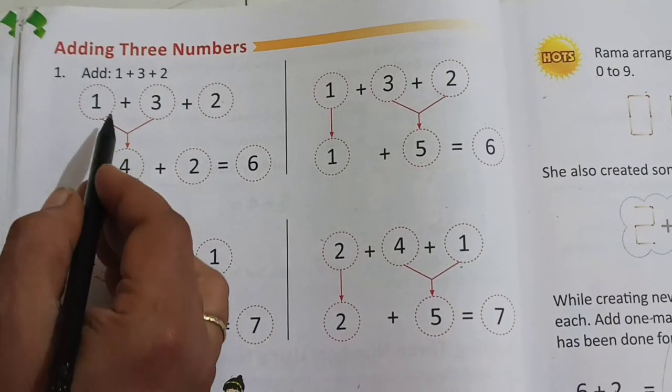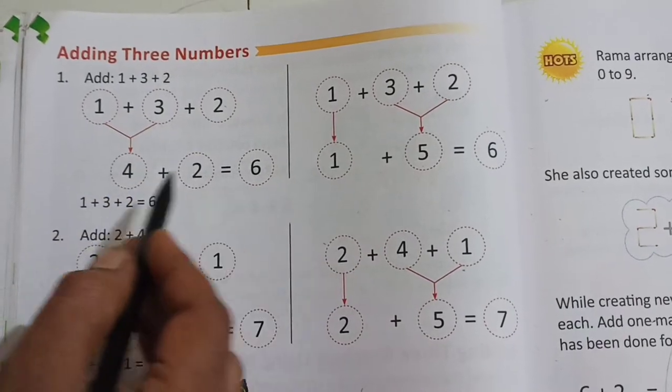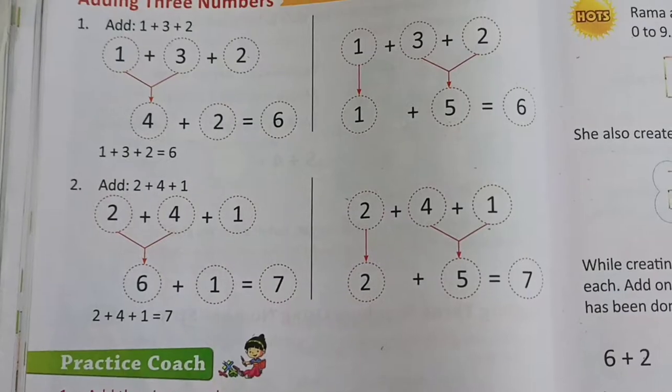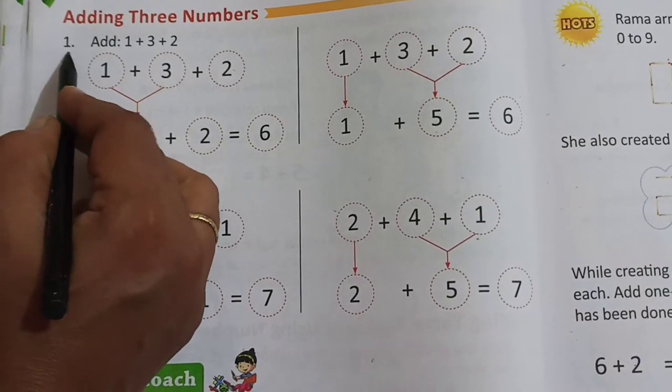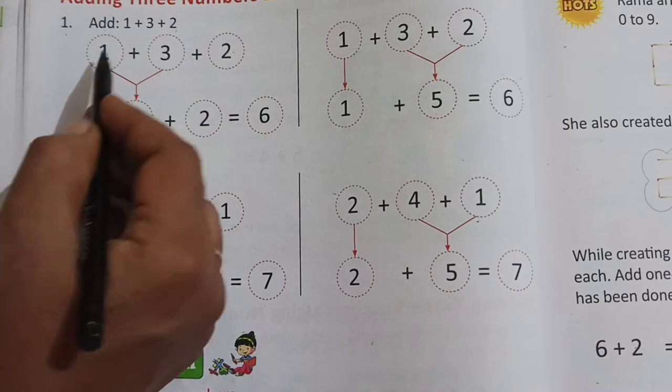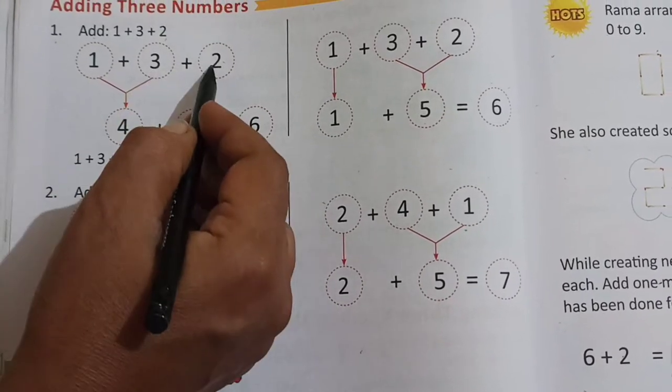Now here we will see how to do addition in horizontal position. Look here. Add 1 plus 3 plus 2. Here is 1, 3, and 2.